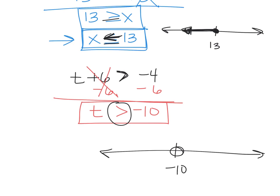You go to the right. Your arrow here would be pointing to the right. So go this way. t is greater than negative 10. How are we doing so far?